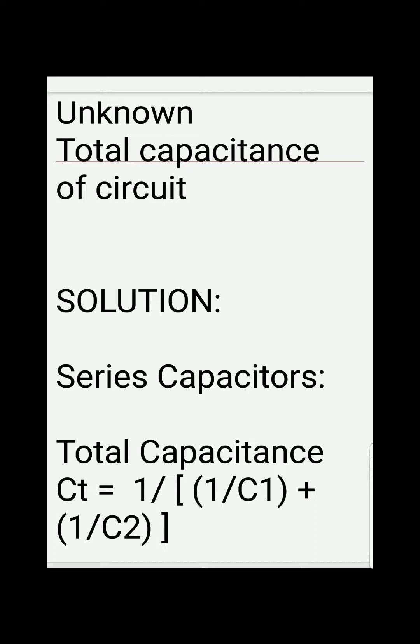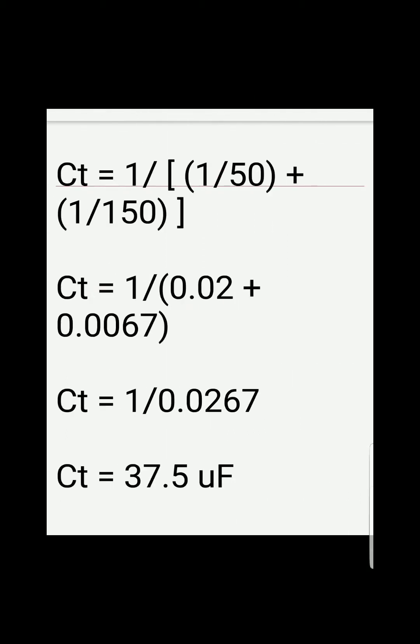Total capacitance is 1 divided by the quantity (1/50 + 1/150). We just substituted the given values, so we got 1 divided by 0.02 plus 0.0067.